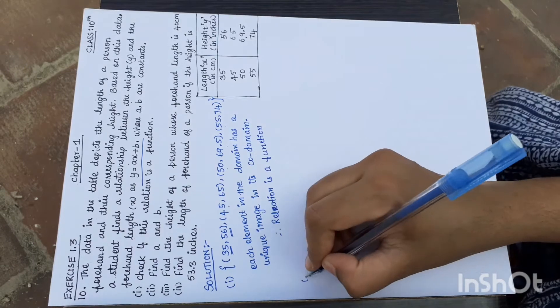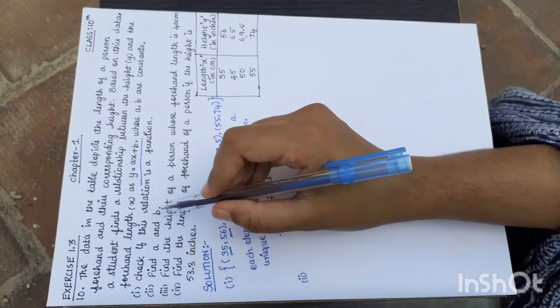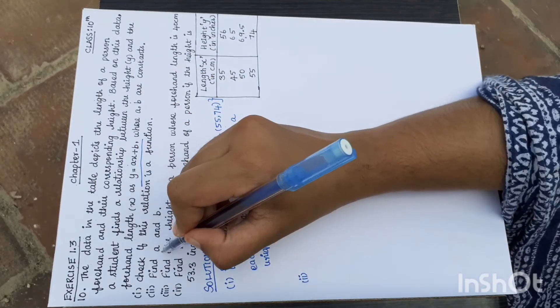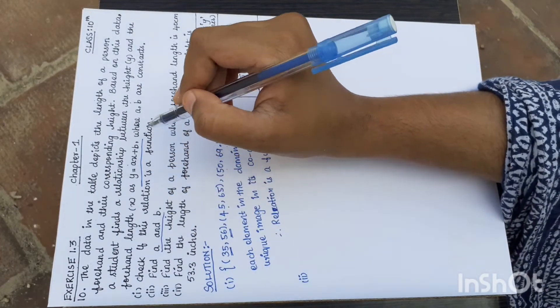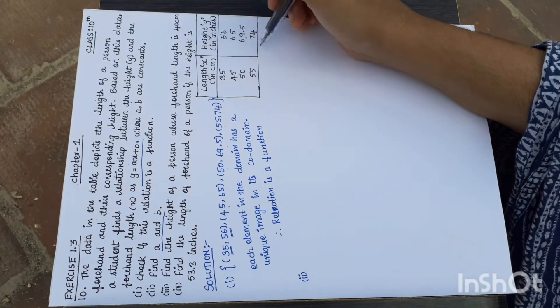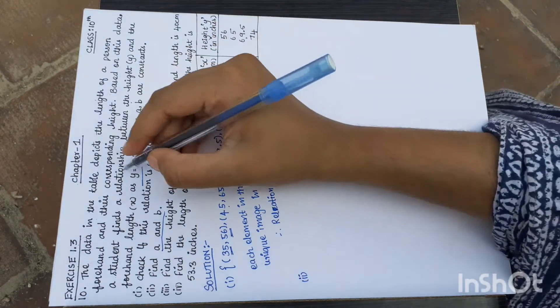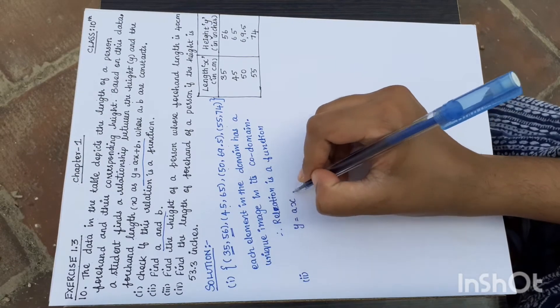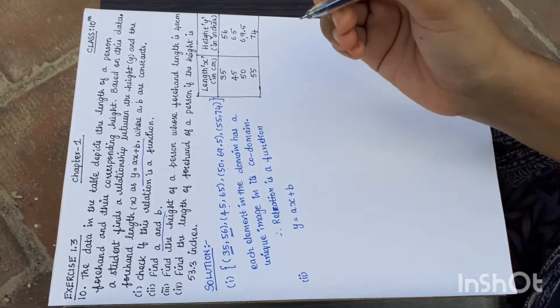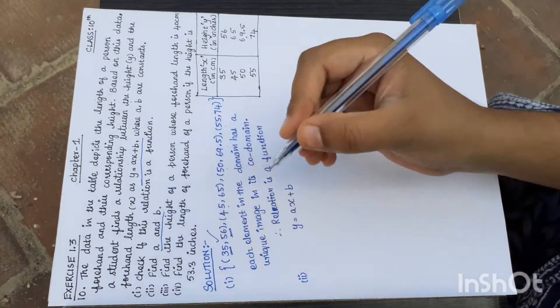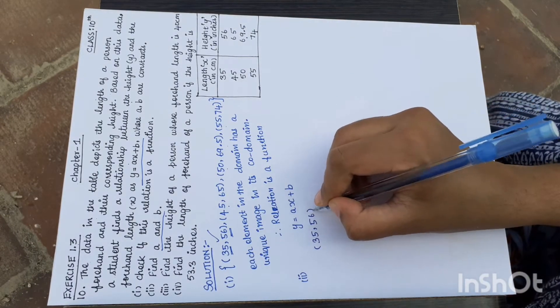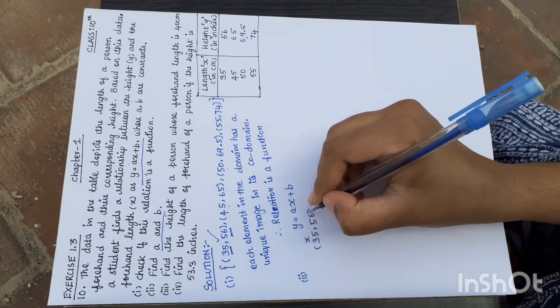Second subdivision: find a and b. We have the x values and y values in the table, and our condition is y equals ax plus b. Suppose we take the first set of values, that is 35, 56, where this is x and y.